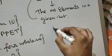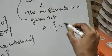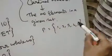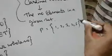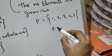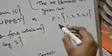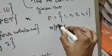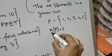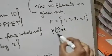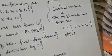Let us clarify with an example. Suppose there is a set P. The elements are 1, 2, 3, 4, 5. Now what is the cardinal number of this set? Just count the number of elements: 1, 2, 3, 4, 5 — five elements. Therefore the cardinal number will be 5. The cardinal number is represented by small n, so we write n(P) = 5.